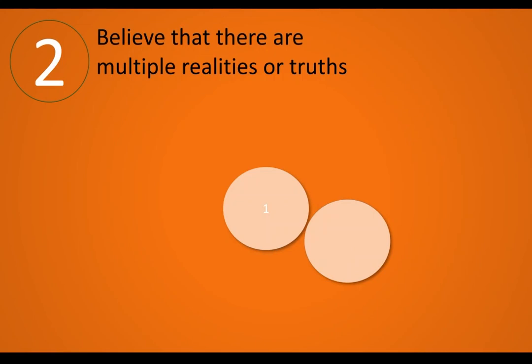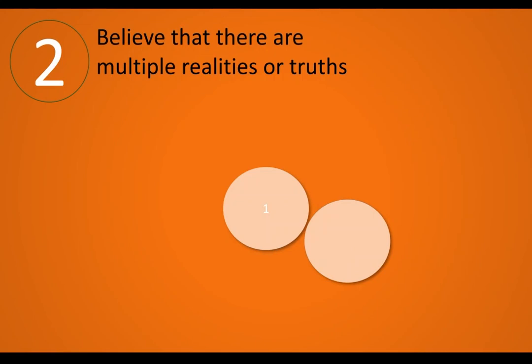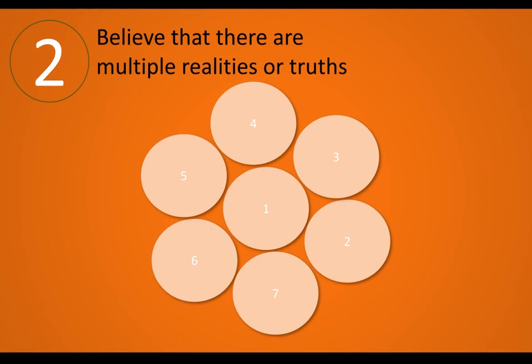The second concept is that there are more than one reality — there are many realities and multiple truths. This is not independent of the perceiver; it depends on how people perceive the truth, the reality, or the knowledge. It depends largely on the people who are shaping that reality or creating that truth.